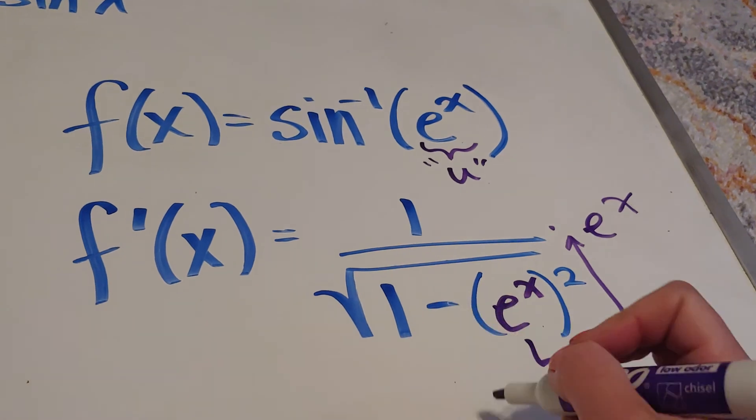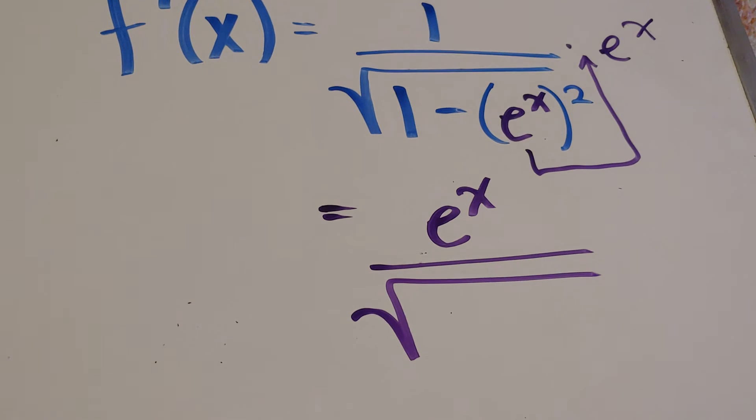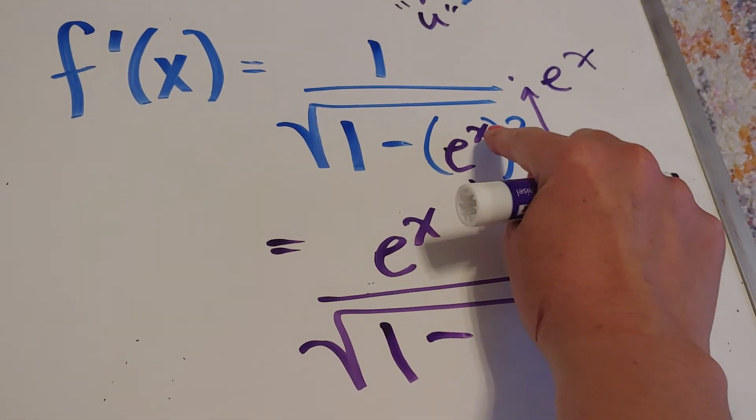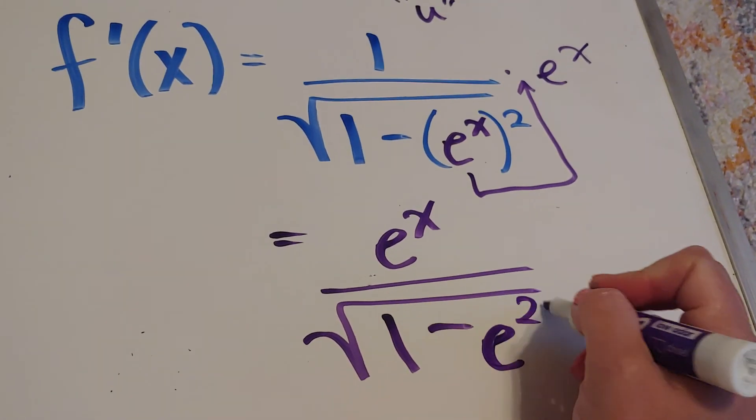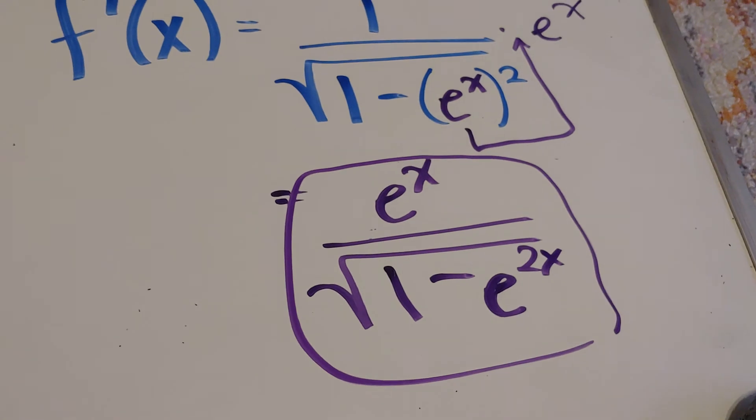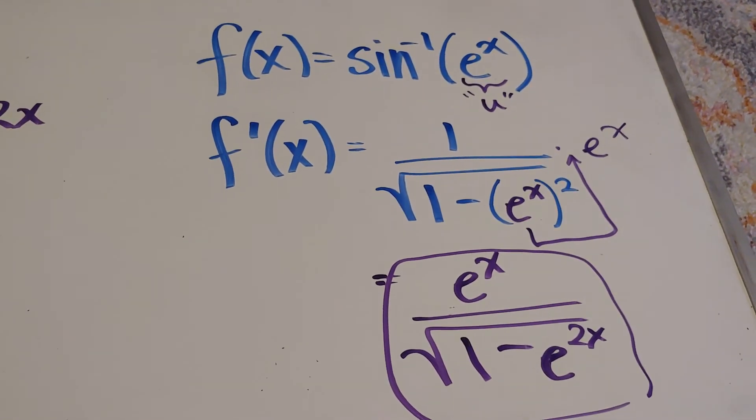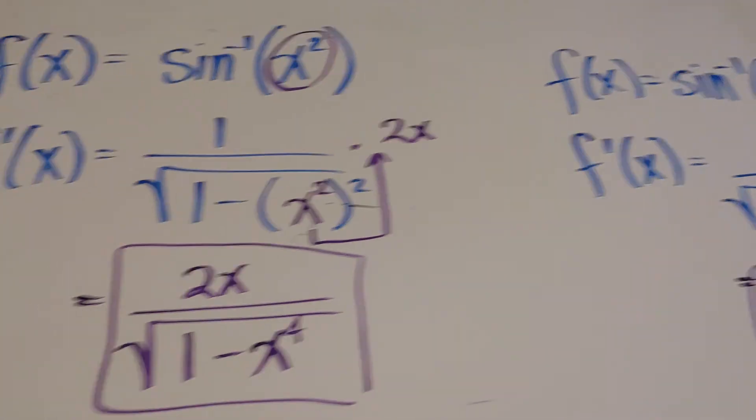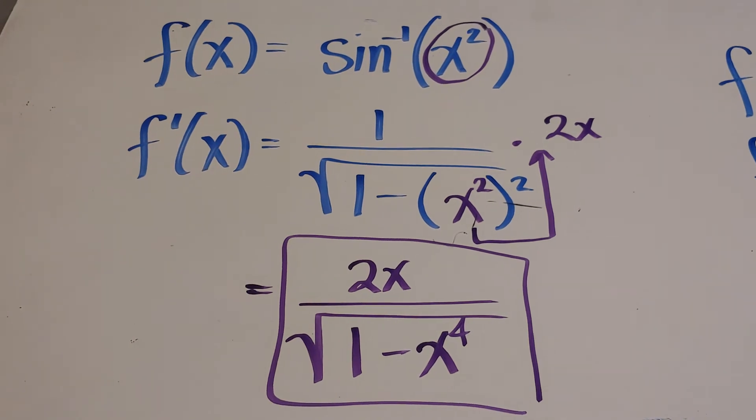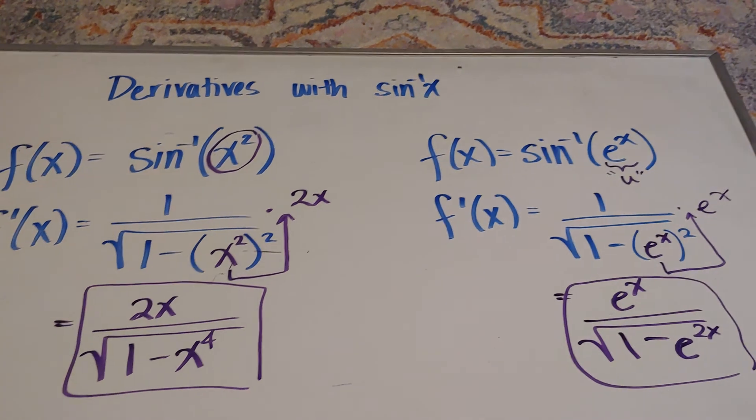Let's squish that answer together. I get an e to the x on top. And on the bottom, I get the square root of 1 minus, and here you want to multiply exponents. So, x times 2 is 2x, giving e to the 2x. And there we have it. That's the derivative of sine inverse of e to the x. And over here is the derivative of sine inverse of x squared. So, make sure you are careful. You know your derivatives of sine inverse and how to use it with chain rule.